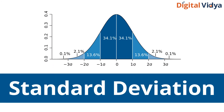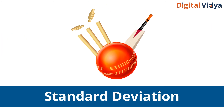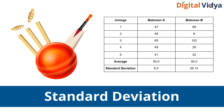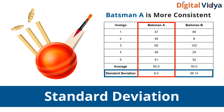Coming up to standard deviation — it is a quantity which tells us how much the values deviate from the mean value. For example, in cricket, we usually compare batsmen by their averages, that is, their mean scores over their careers. But this tells only part of the story. The consistency of a batsman is shown by the standard deviation of his scores.